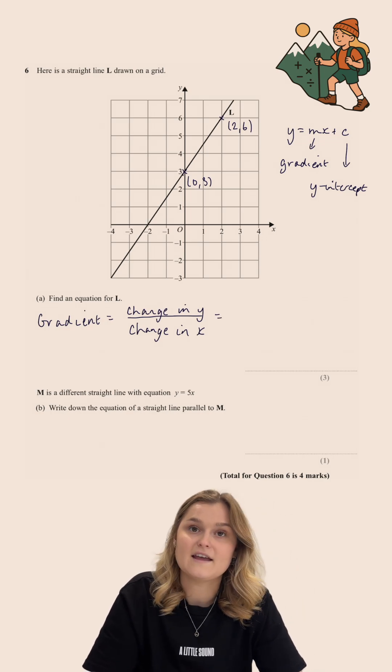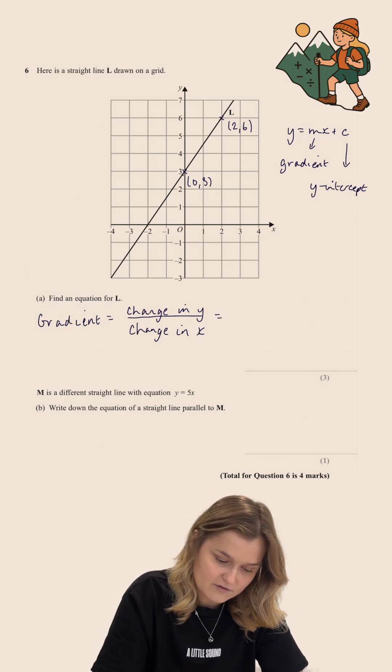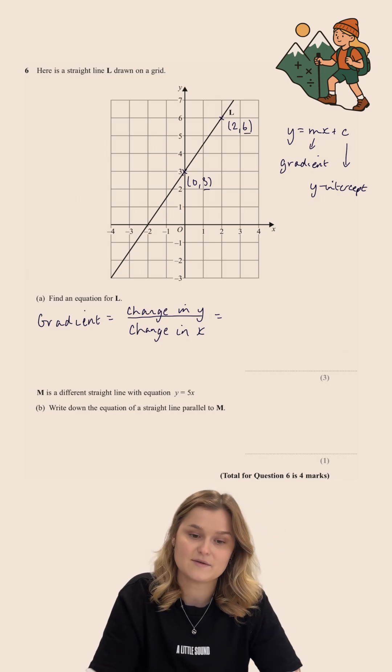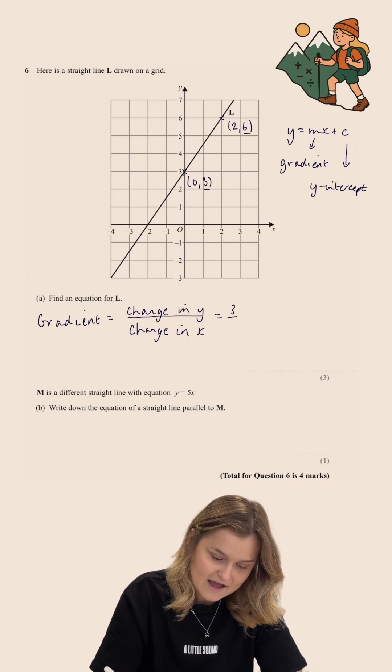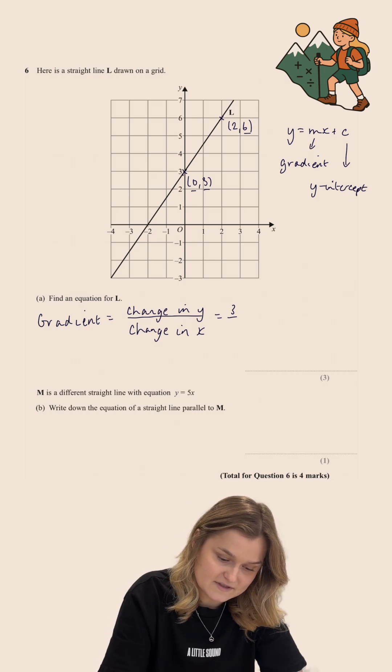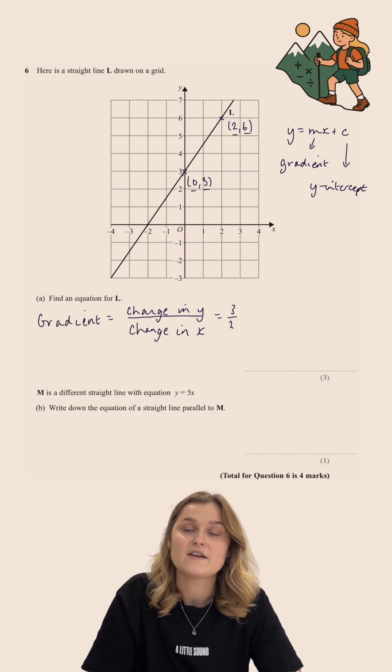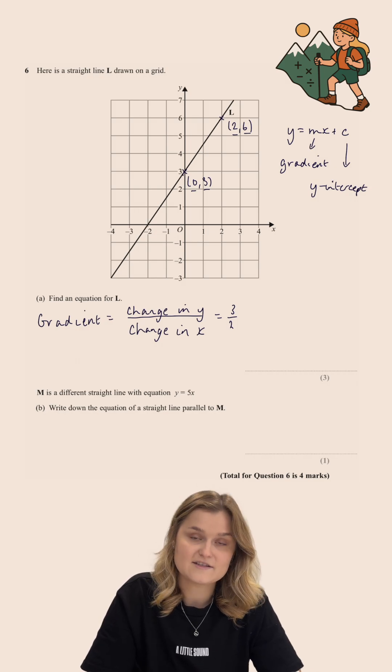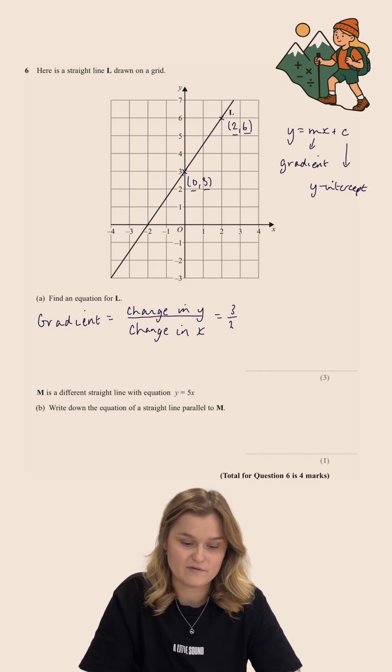So, my change in Y here, the Y-coordinate, it's gone from 3 to 6, and so it's changed by 3. And my change in X, the change in the X-coordinate, well, it's gone from 0 to 2, so that's a change of 2. So, the gradient of this straight line is 3 over 2, or 1.5.